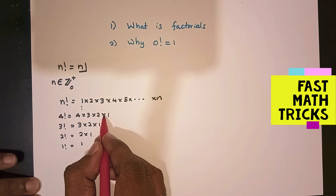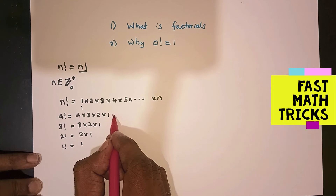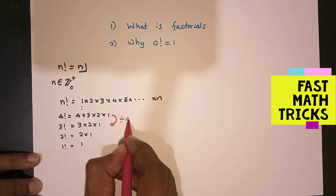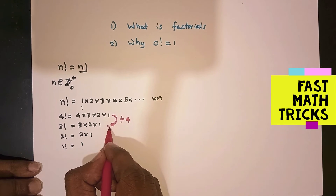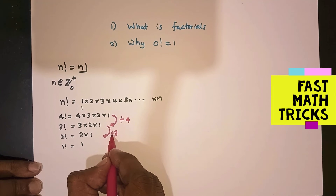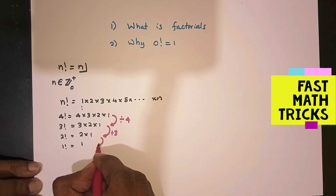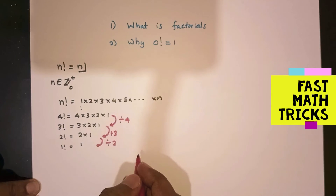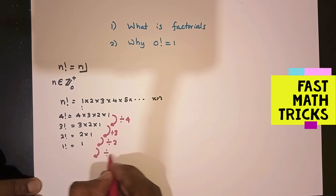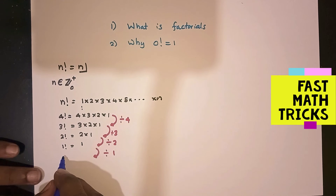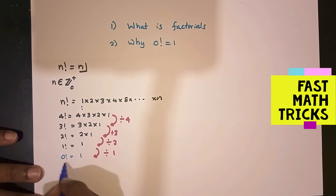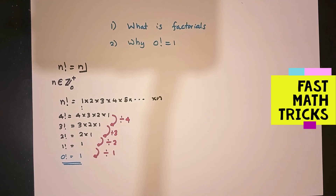Starting from 4 factorial equals 4 into 3 into 2 into 1: to obtain 3 factorial, you divide by 4. Divide again by 3 to get 2 factorial. Divide again by 2 to get 1 factorial. Divide again by 1 to get 0 factorial. So 0 factorial equals 1 divided by 1, which is 1. Therefore 0 factorial is defined as 1, and similarly 1 factorial is defined as 1.